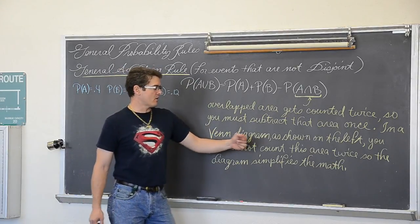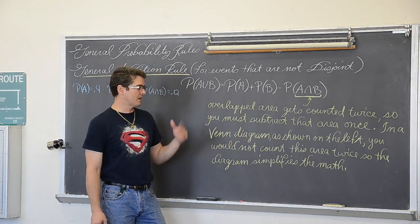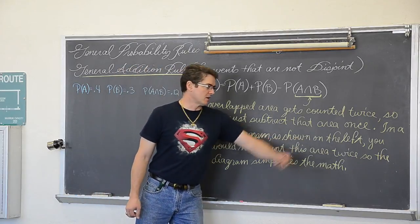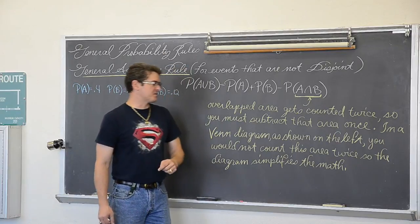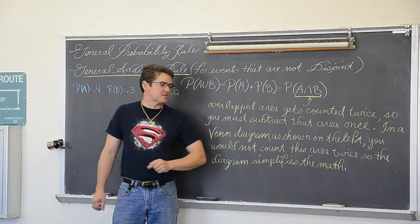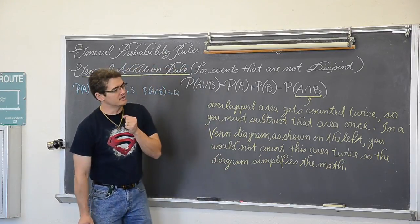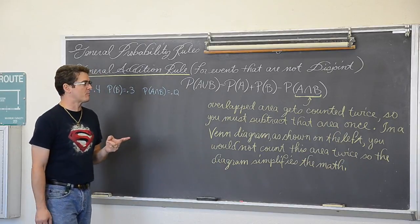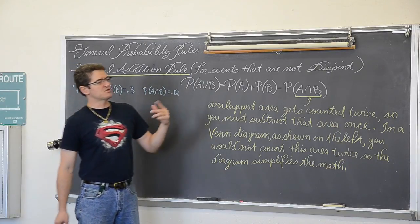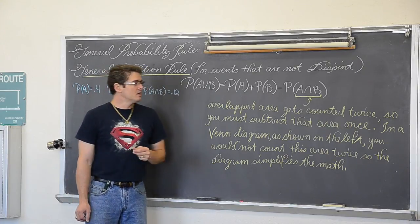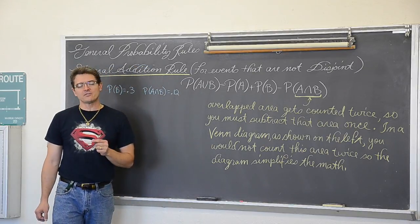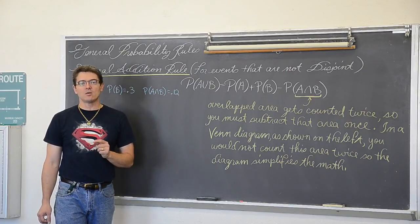In a Venn diagram, which is about what I am about to set up for you, as shown on the left, but not yet, you would not count this area twice so the diagram simplifies the mathematics. And indeed we are going to be learning these two general probability rules. These general probability rules will be given to you on your AP statistics exam. So you don't need to memorize them, but you do have to know how to read them and know how they work.